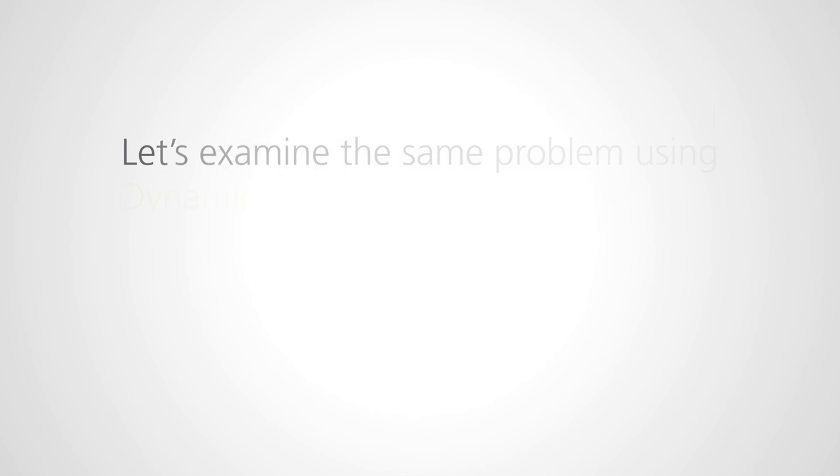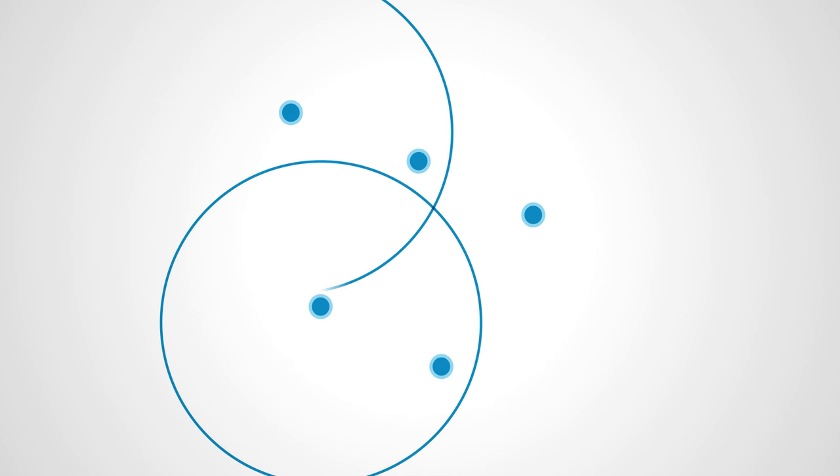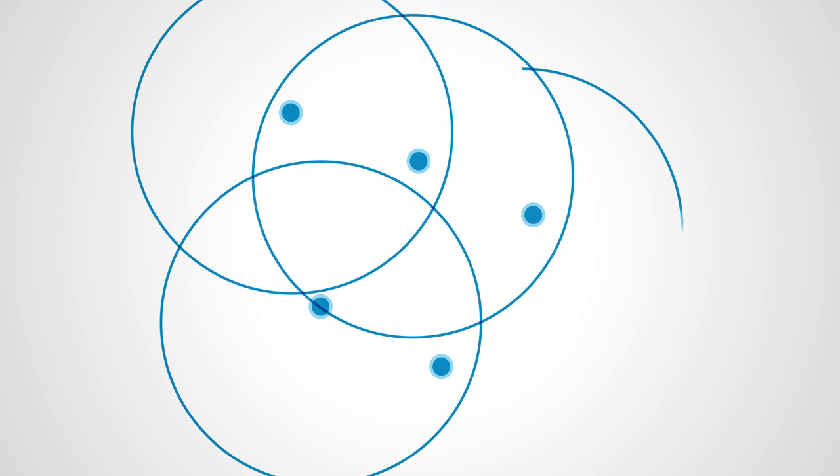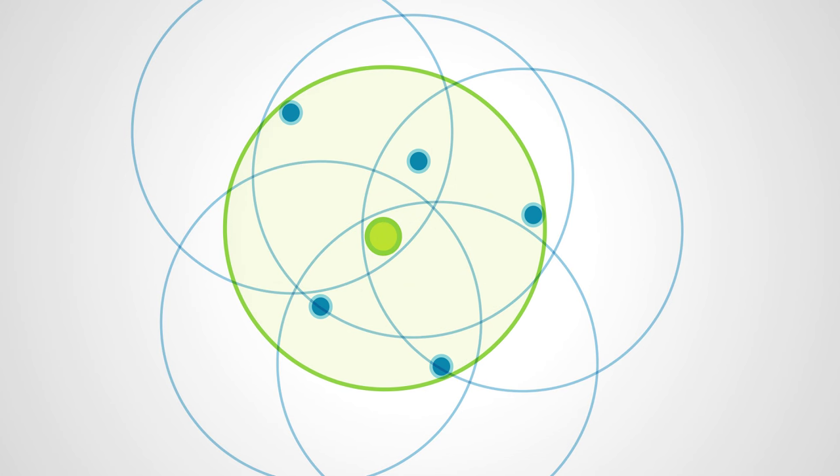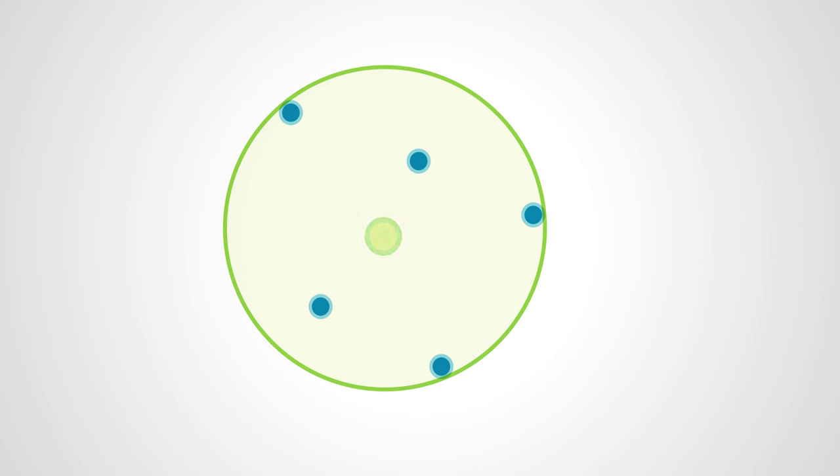Let's examine the same problem using Dynamic Ring Analysis. With a bottom-up approach, the tool places rings around actual portfolio locations. Where rings intersect, a new ring is placed, and the process iterates until the true ring of maximum exposure is obtained.